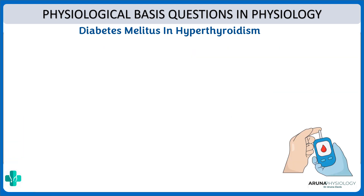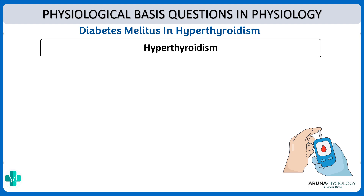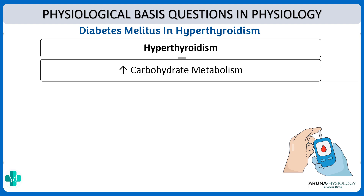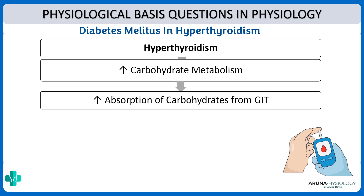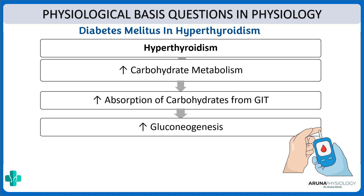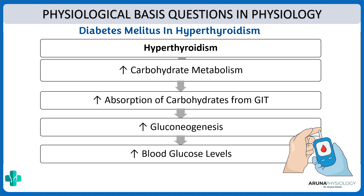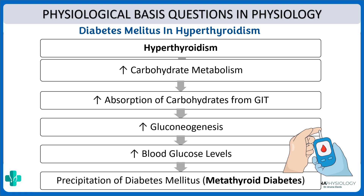Next, why is there diabetes mellitus in hyperthyroidism — why are patients more prone for diabetes mellitus? That is because of the effect of thyroid hormone on carbohydrate metabolism. With increased thyroid hormone levels there is increased carbohydrate metabolism, which means increased carbohydrate absorption from the GI tract, increased gluconeogenesis, increased blood glucose levels, and thus precipitation of diabetes mellitus, which is called metathyroid diabetes.